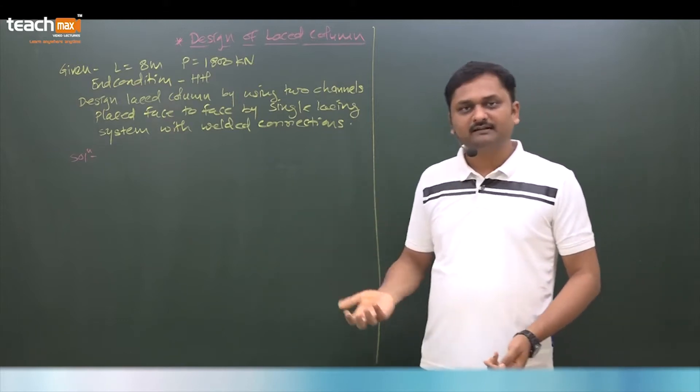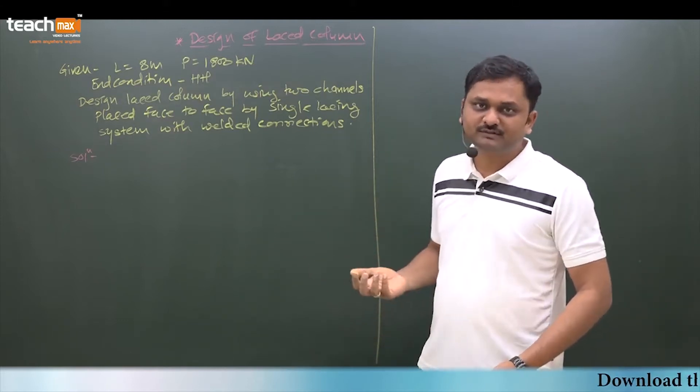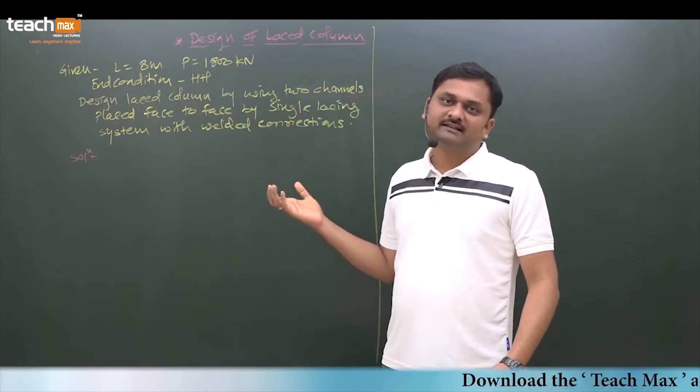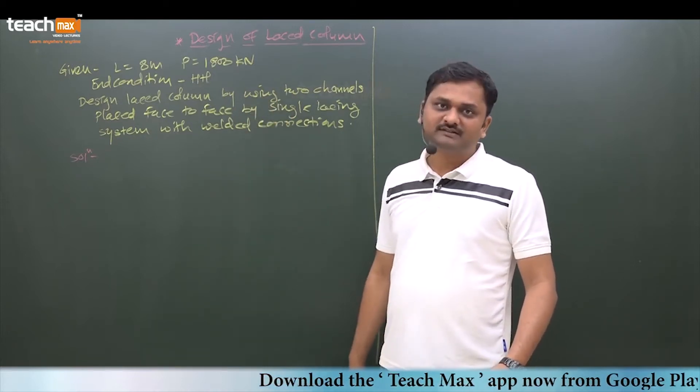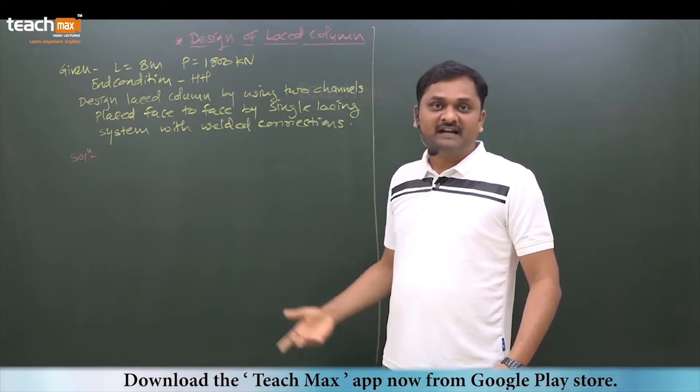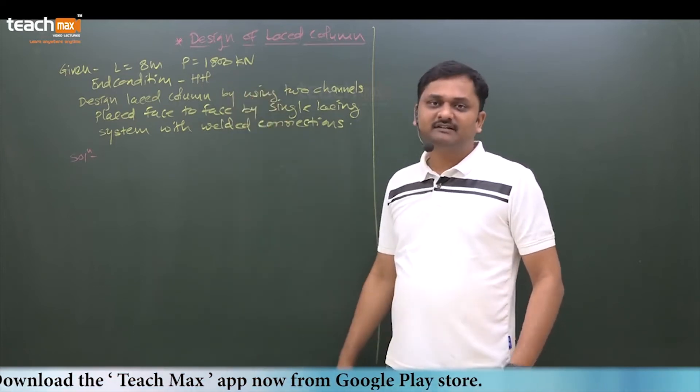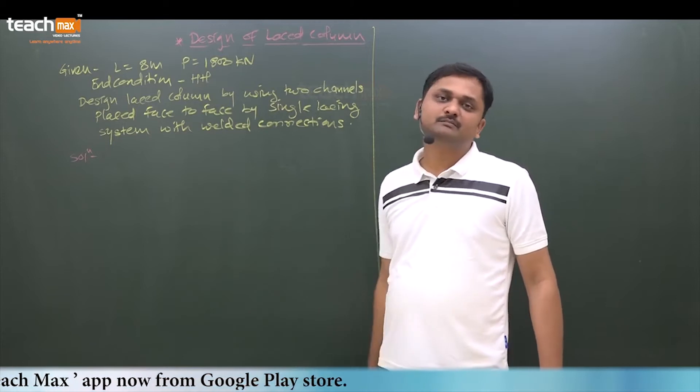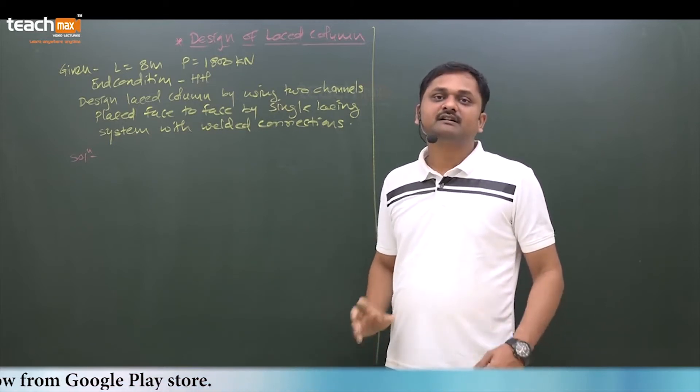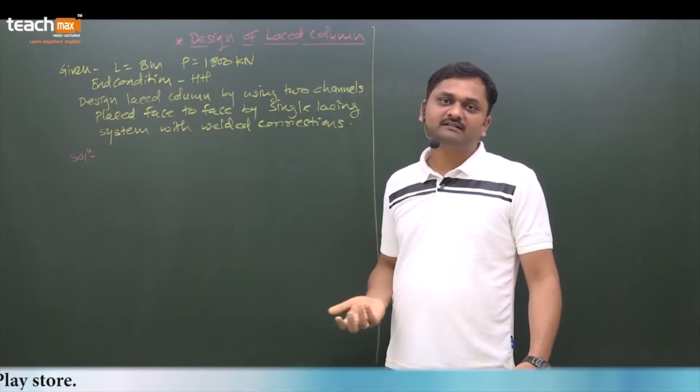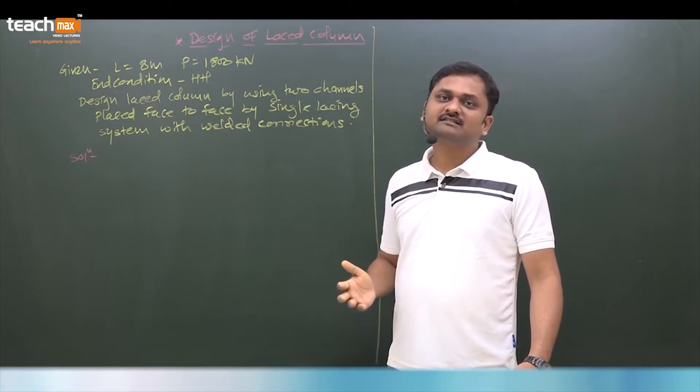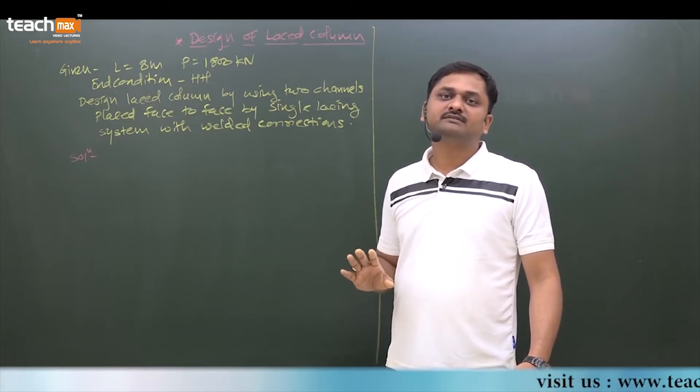in this example I am taking another case. The question is asked like this: the span of the column is given 8 meters, factored axial compression is given 1800 kN, end condition - both ends are hinged, meaning translation is restrained at both ends but rotation is free at both ends.